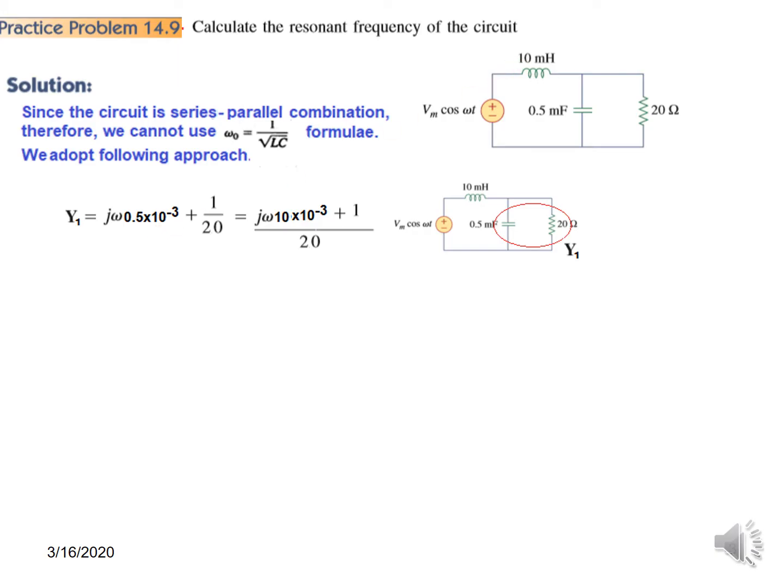Admittance will be this one, this one, and the modification of these two. Sorry, not first of all—we are solving this for Y₁. These two are in parallel, so for this we will find Y₁.